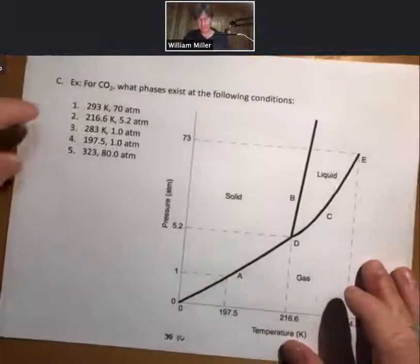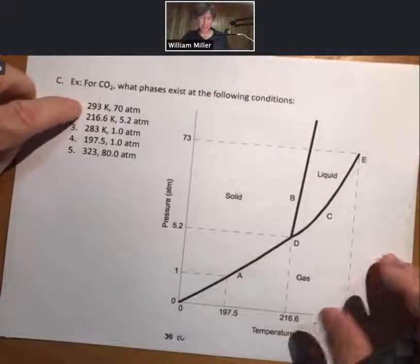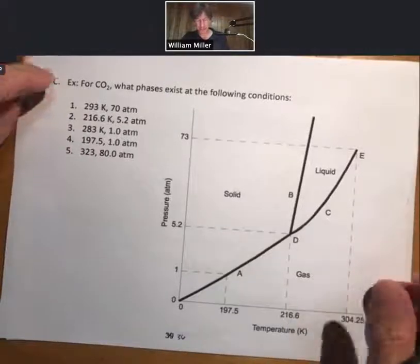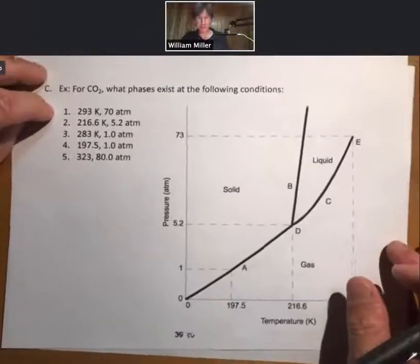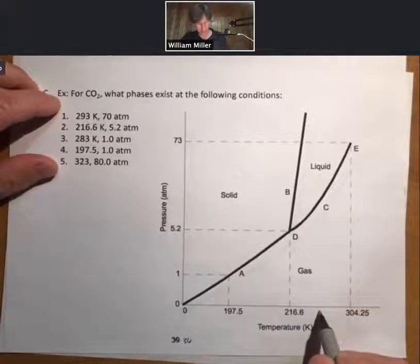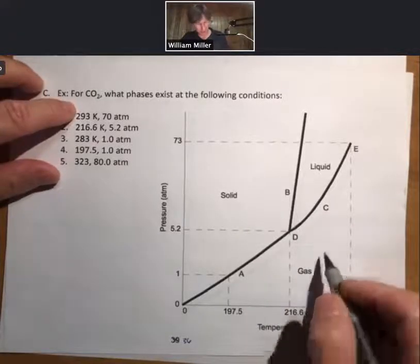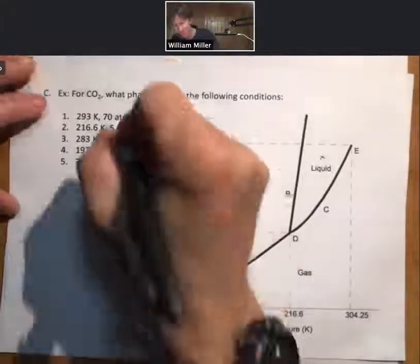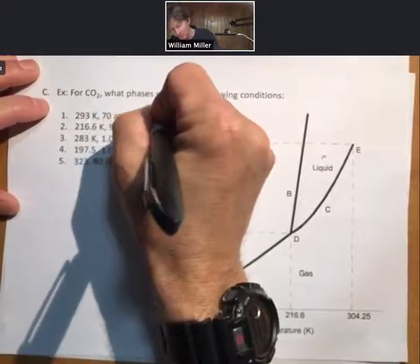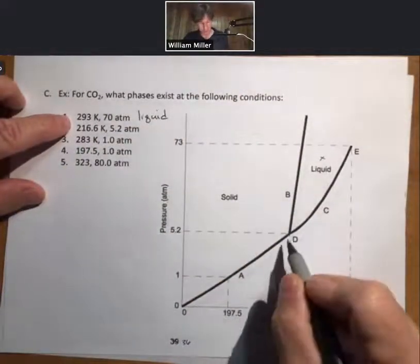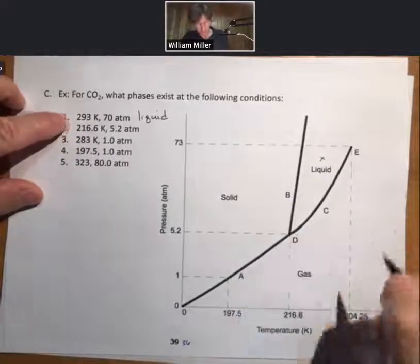One is based on the temperature-pressure combination, where are we, what phases exist? Let's run through a couple of examples here. So 293 kelvin will be somewhere in here. 70 atmospheres—go up to 70 atmospheres—will be somewhere around right there. That'll be in the liquid phase. 216.6, 5.2, that's going to be point D.